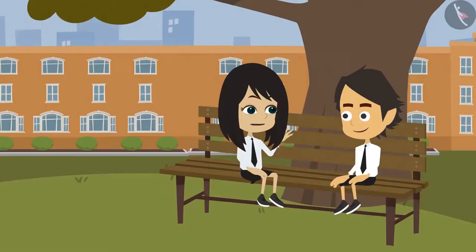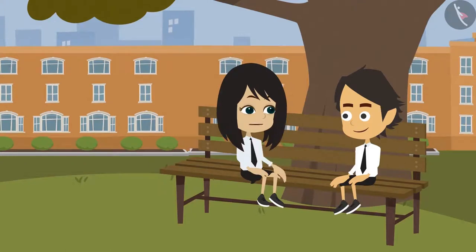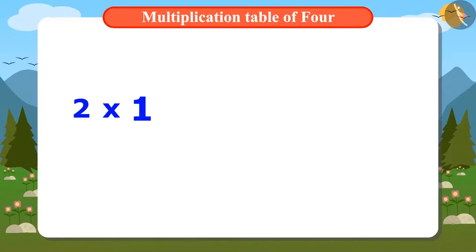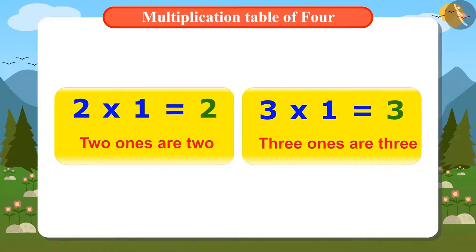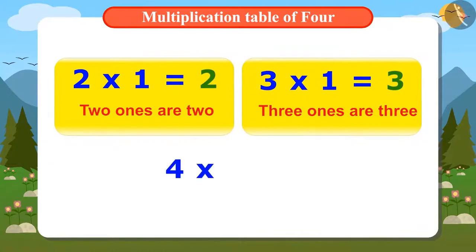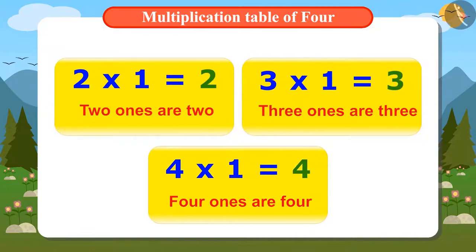Ones means? Ayushman, we sing to memorize the tables easily. That's why 2 times 1 equals 2 is read as 2 ones are 2 and 3 times 1 equals 3 is read as 3 ones are 3. Oh. That means 4 times 1 equals 4 is read as 4 ones are 4.